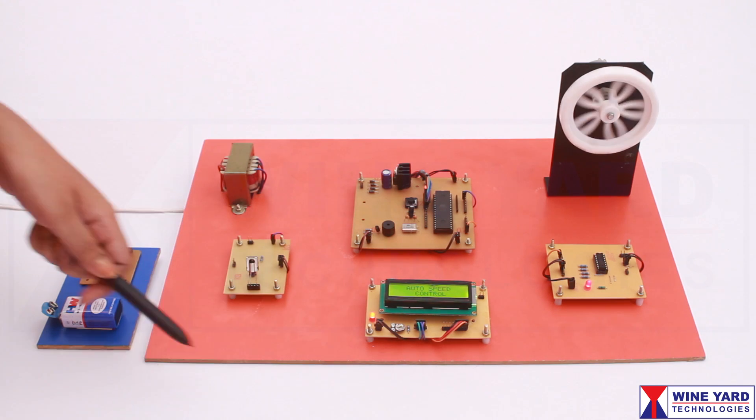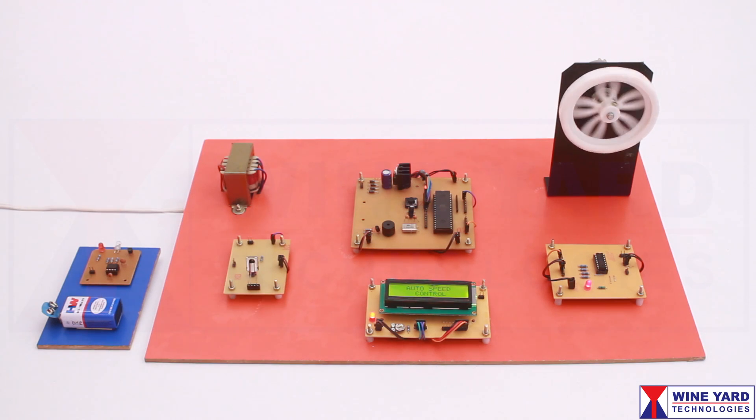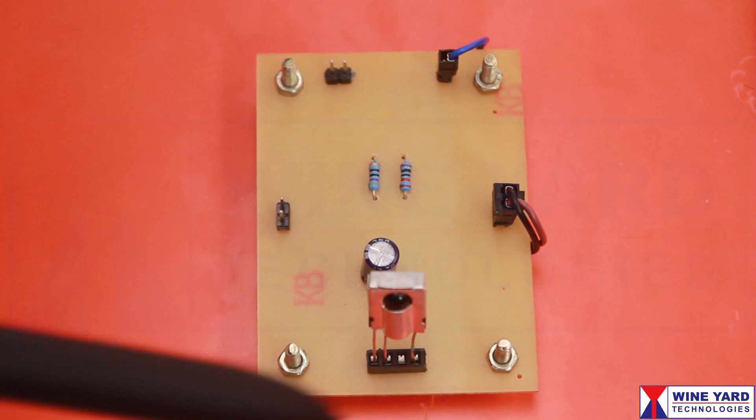This project is a virtual speed breaker for automatic speed control of vehicles at school zones. To enable this automation, every vehicle has to be fitted with this IR receiver module.